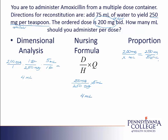That gives me a true proportion: milligrams over milliliters equals milligrams over milliliters. So I'm ready to cross multiply. 200 times 5 gives me 1,000 as the first diagonal. On the second diagonal I get 250X. To solve, I'll divide both sides by 250. That allows me to isolate my variable and I find that X is 4 milliliters.